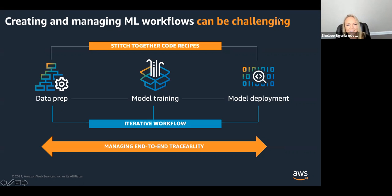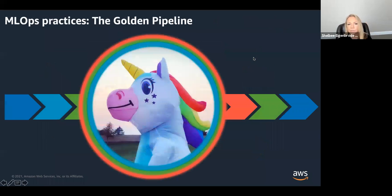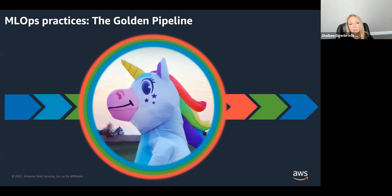There really isn't a single golden pipeline to go to. Just like there's not a golden pipeline for DevOps, there really isn't a single golden pipeline for machine learning. The reason is because the technical implementation, the organizational structure, and the tools you need to integrate with may vary. However, what we can do and standardize on pretty well is that the steps and the core components we recommend remain the same across the machine learning workflow.